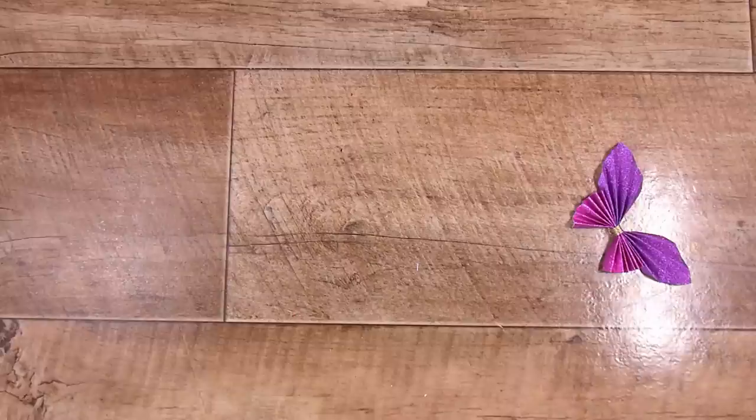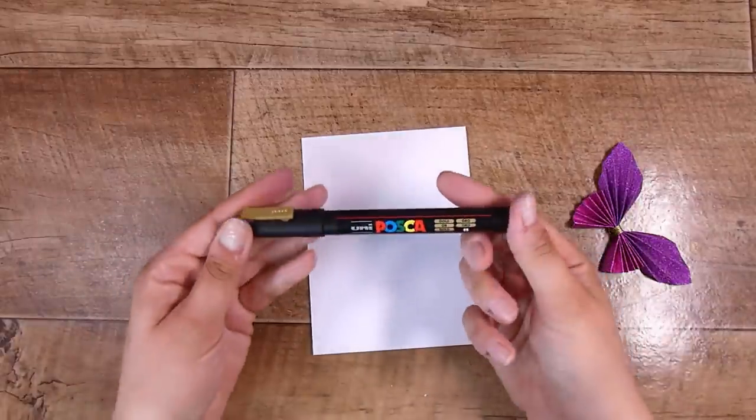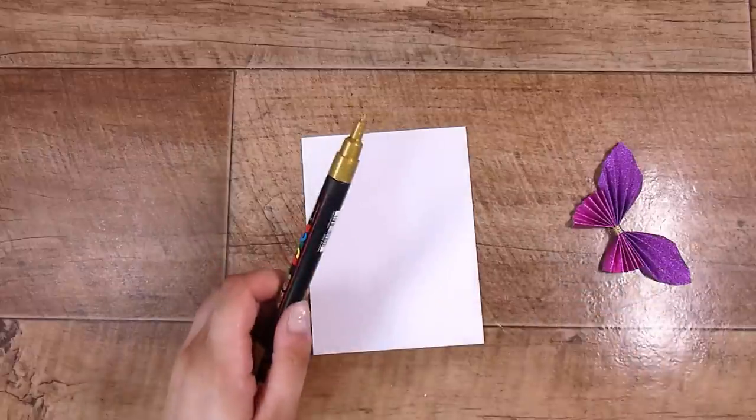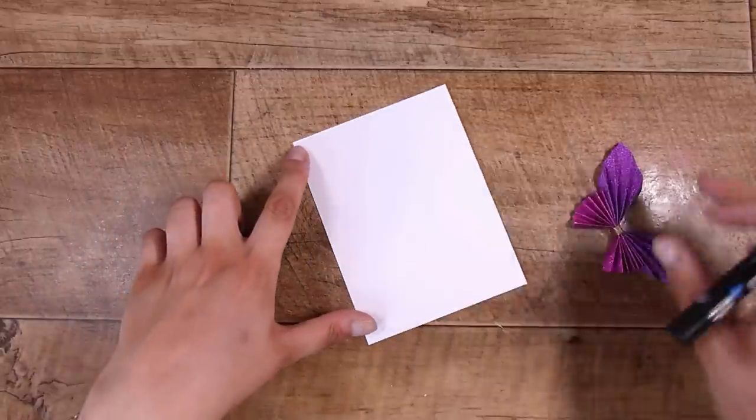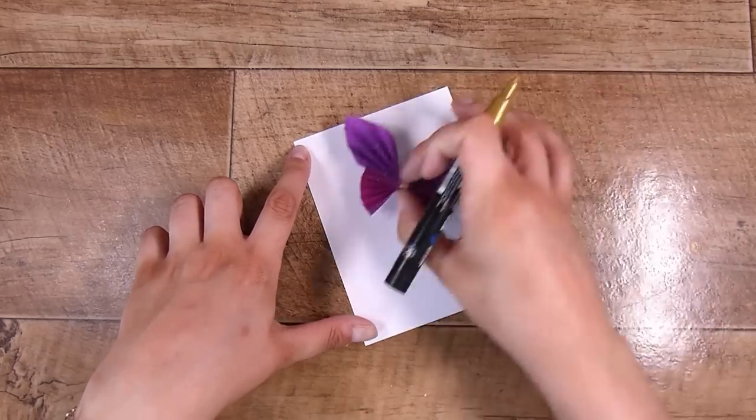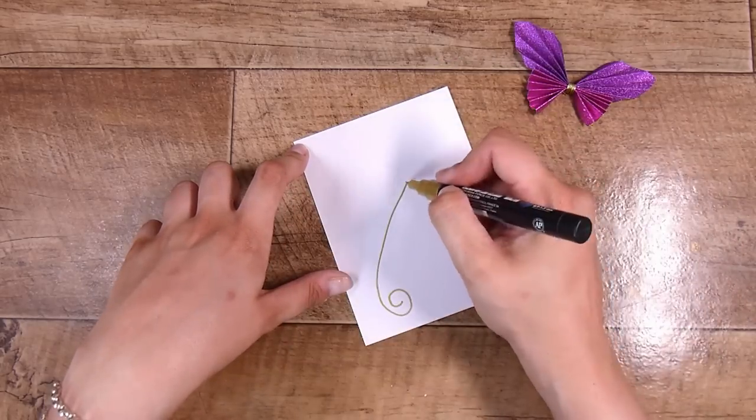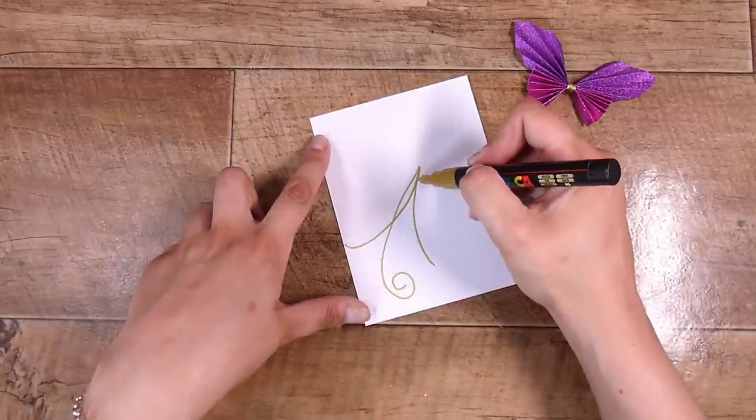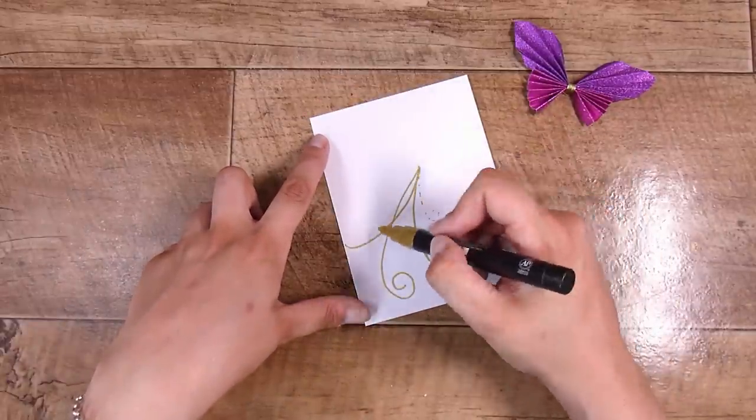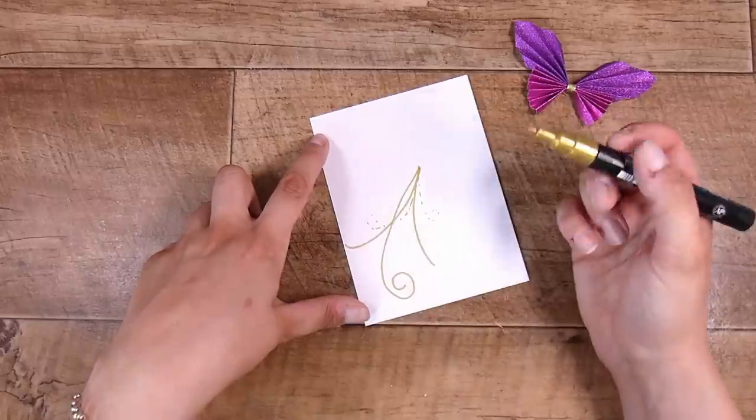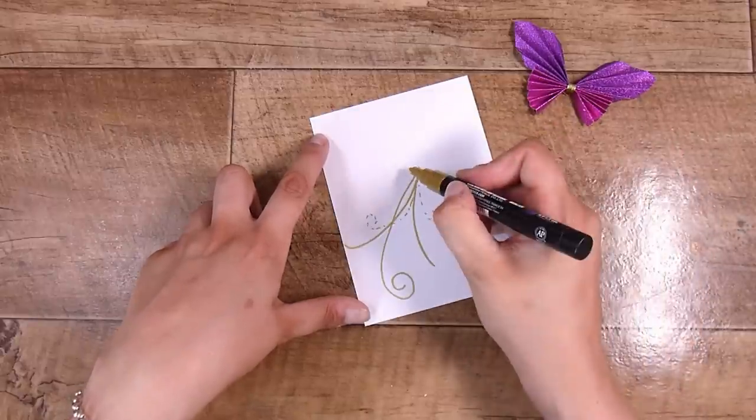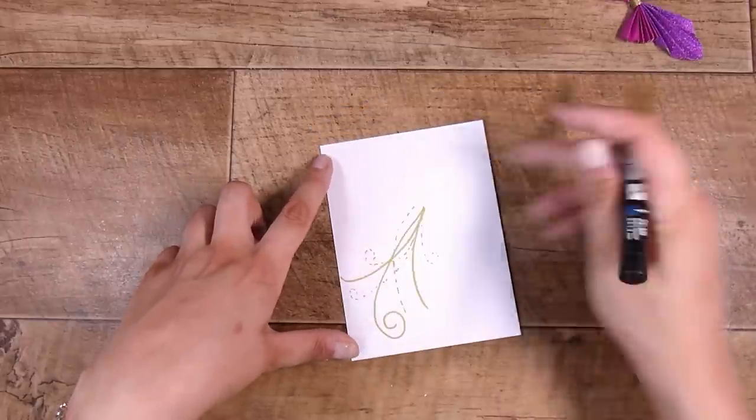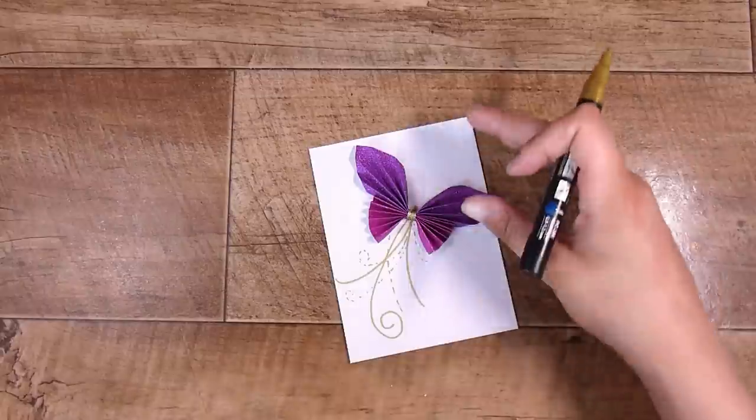I am going to start off with a card front here. I have a gold Posca pen just because this is a little bit thicker than the other gold Uniball pens that I have. I'm going to place my butterfly kind of where I want it and I just want some sort of swirly detail coming out the back. I know that this is definitely not my favorite thing to do, hand-drawn bits and pieces, but I think this ends up looking okay. I do some little dotted swirls and little dots here, there and everywhere. I do some solid ones, I do a twirl at the end.